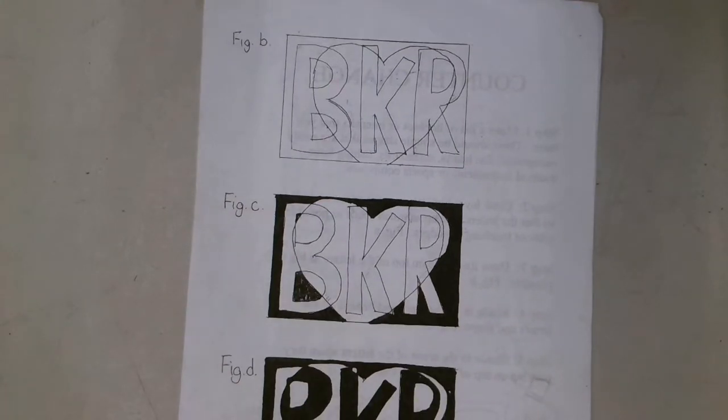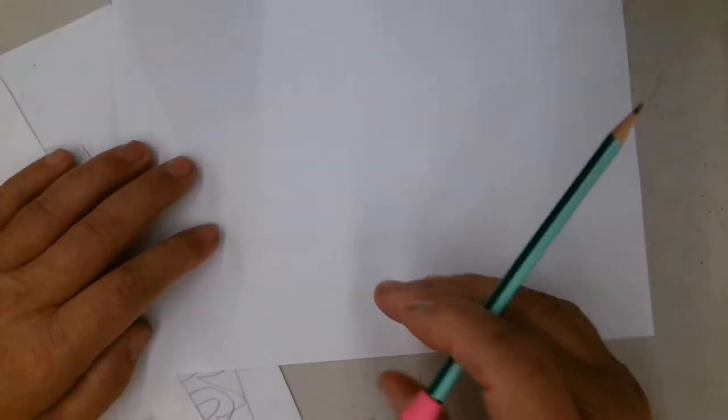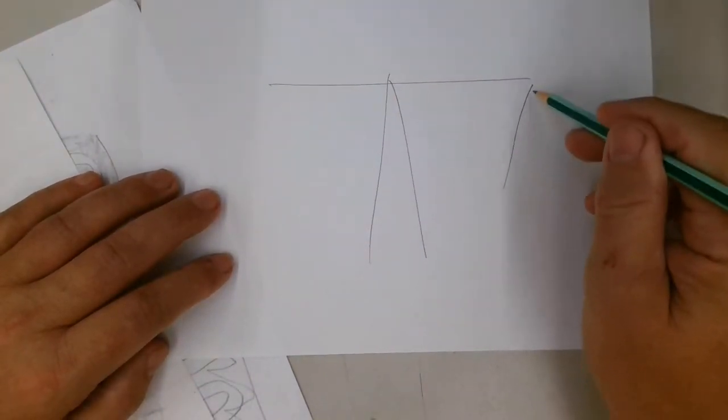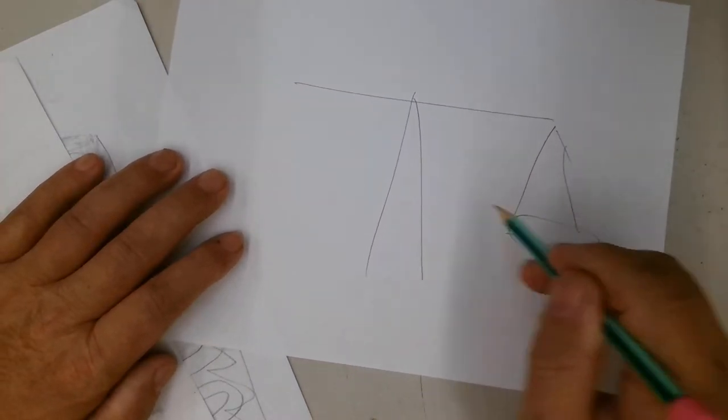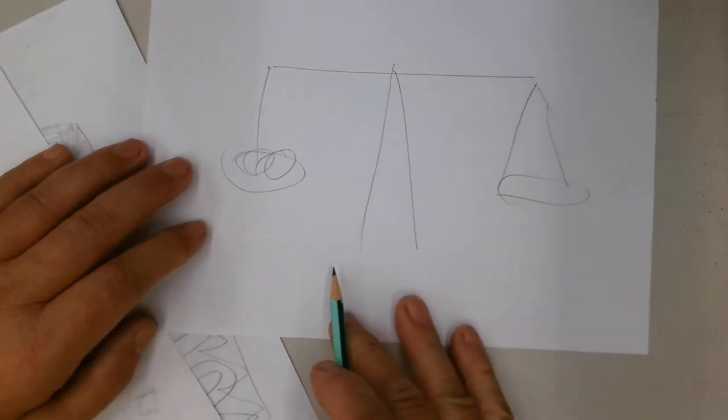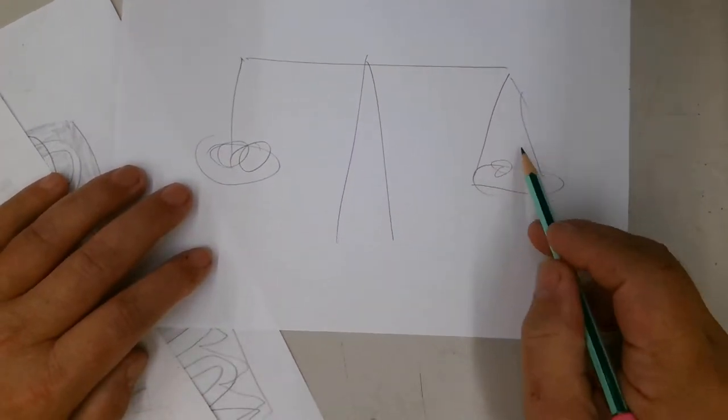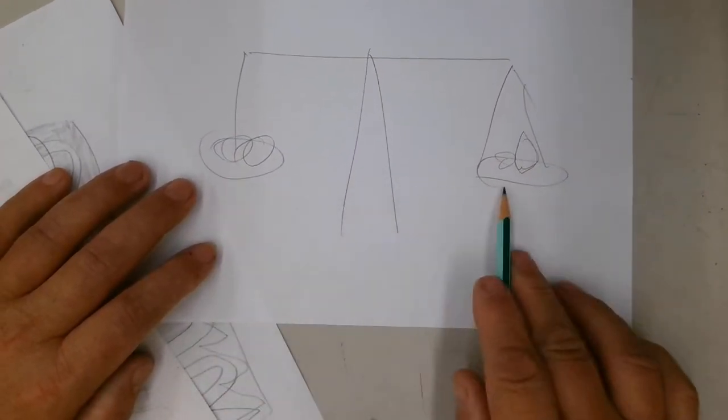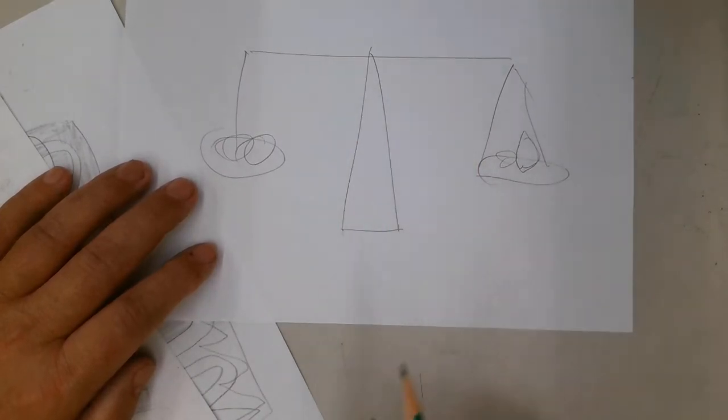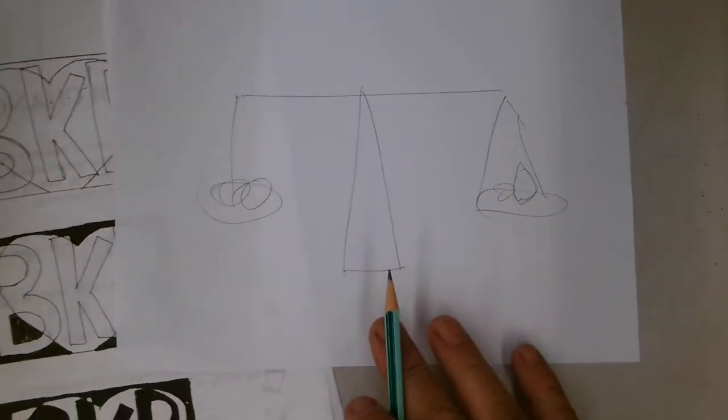In the old days, you might see a scale that would have a little basket hanging off of one end, a little basket hanging off the other end, and there would be some objects over here and some objects over here. And if they were the same weight, they balanced out. That's the kind of idea we're talking about when we're talking about balance.